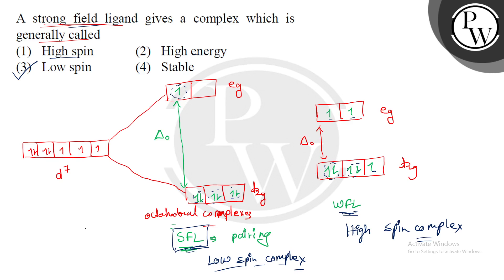Where you have weak field ligands, you call it a high spin complex, and where you have strong field ligands, you call it a low spin complex. There are many factors that determine whether a complex is stable or unstable — it's not only the strong field ligand. We can only say high spin or low spin based on the field. In the case of a strong field ligand, this is a low spin complex. So option 3 is the right answer to your question. Hope you understood it well. Good luck.